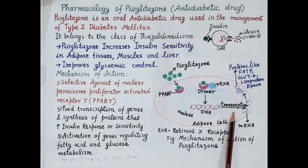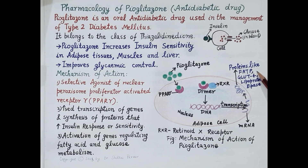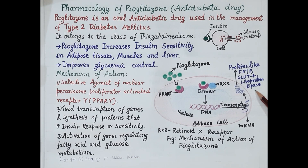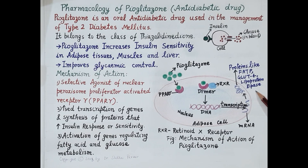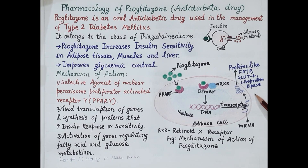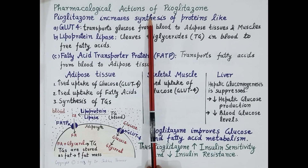This PPAR-gamma/RXR dimer acts on the DNA and leads to increased transcription of genes required for the synthesis of proteins. There is increased synthesis of proteins like FATP (fatty acid transport protein), GLUT4 (glucose transporter 4), and lipoprotein lipase. These proteins regulate glucose and fatty acid metabolism, thereby causing increased uptake of glucose from the blood by the body cells. Thus, by synthesizing these proteins, pioglitazone increases insulin sensitivity.